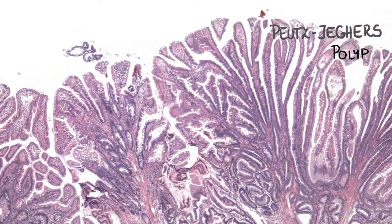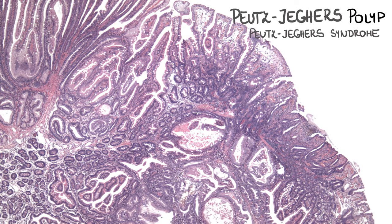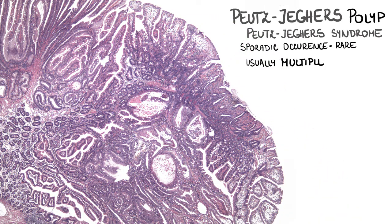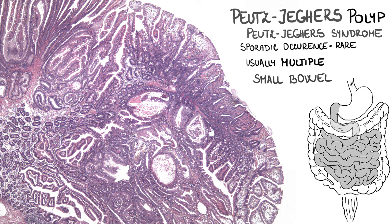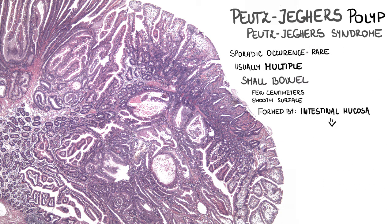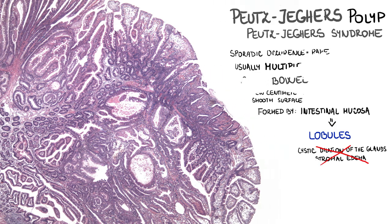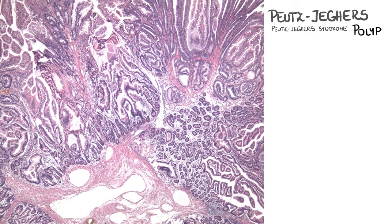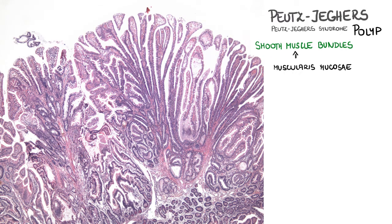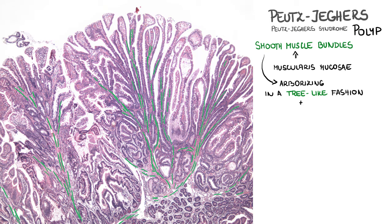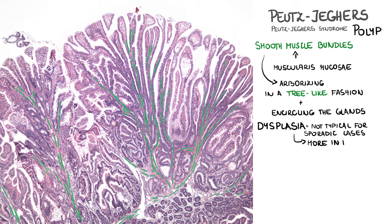A Peutz-Jeghers polyp usually comes as part of Peutz-Jeghers syndrome; sporadic occurrence is rare. It is usually multiple, with predilection to the small bowel, with an average size of a few centimeters and a smooth surface on gross examination. On the histological level, it is formed by intestinal mucosa arranged into lobules. In contrast to juvenile polyps, cystic dilation of the glands and stromal edema with inflammation are not present. Instead, there is a characteristic presence of smooth muscle bundles branching from the muscularis mucosae and arborizing in a tree-like fashion, encircling the glands. Dysplasia is not typical in sporadic cases but appears more frequently in hereditary polyps.